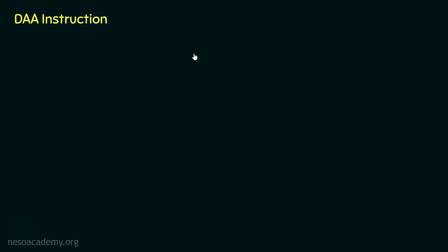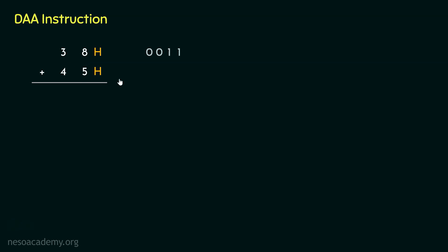Let me explain the situation with an example. Say we would like to add 38 and 45. In the microprocessor, everything is in binary, so it will be helpful to consider this addition in hexadecimal. The BCD representation of 38 is 0011 1000, and for 45, 4 is 0100 and 5 is 0101.